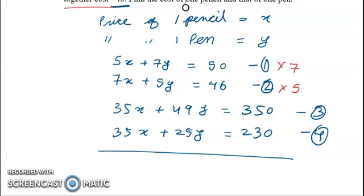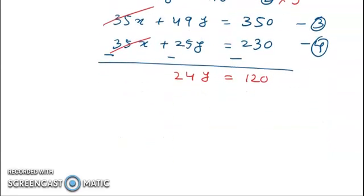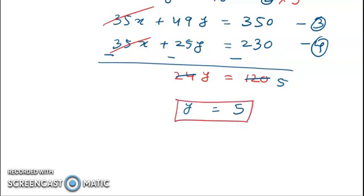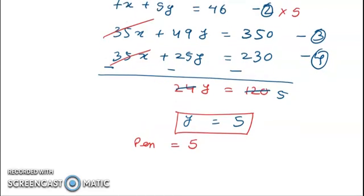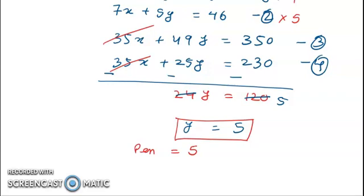To solve this problem, we subtract equation number 4 from equation number 3. The 35x terms cancel out, and we get 24y is equal to 120. So the value of y is equal to 5. Hence, the price of one pen is rupees 5.